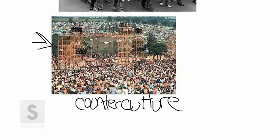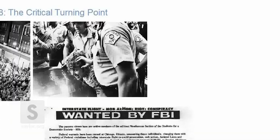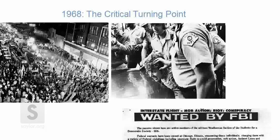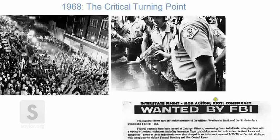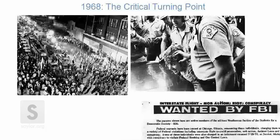1968 was an important transition point and critical turning point in the student movement. First, 1968 is when the Tet Offensive happens in Vietnam, and suddenly the American public wakes up to the fact that the war is far from won. A lot of Americans who've been supportive of their government start to realize that the government had been lying to them for years about how close the war was to being won. As a result of the Tet Offensive, middle-aged people, older people, people who weren't in college start to protest against the government, turning the student movement into a mass movement.